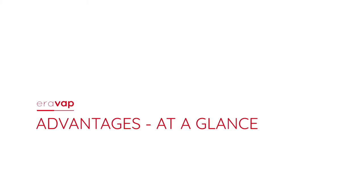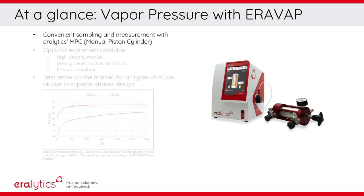AeroVap's advantages at a glance. Convenient sampling and measurement procedure with AeroLytics manual piston cylinder MPC. Optional equipment is available, such as the high viscosity module, the density module DENS4052, or a pressure regulator for high pressure FPCs.